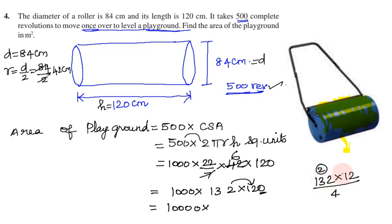Carry over 2. 3 times 12 is 36. 36 plus 2 is 38. Carry over 3. 1 times 12 is 12. 12 plus 3 is 15.